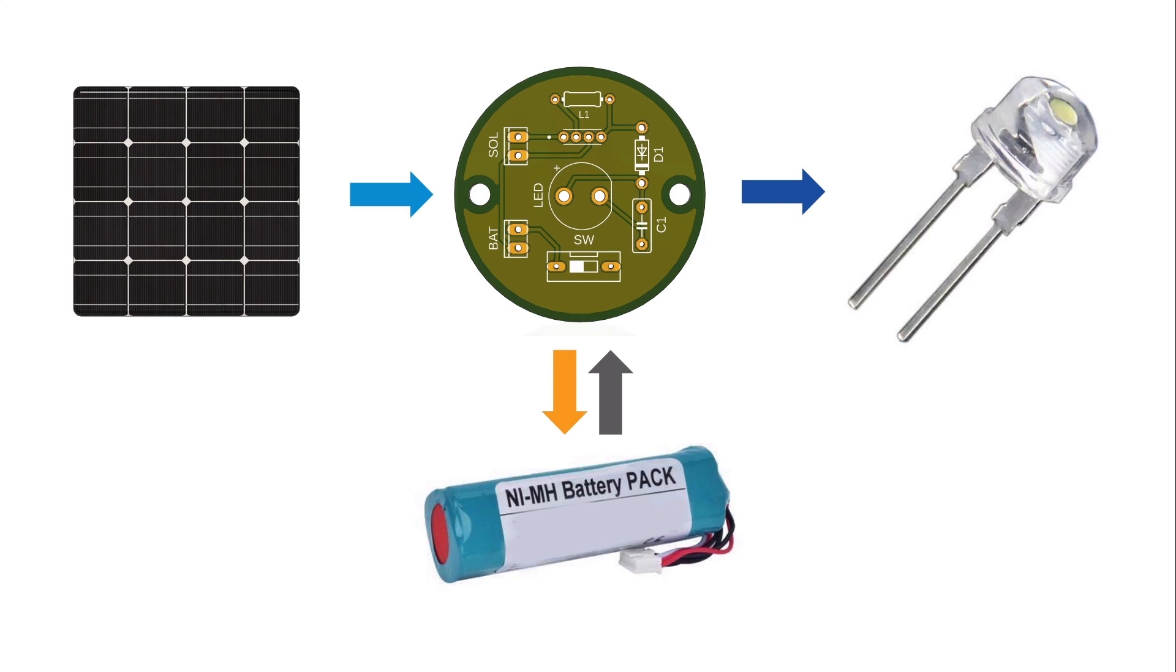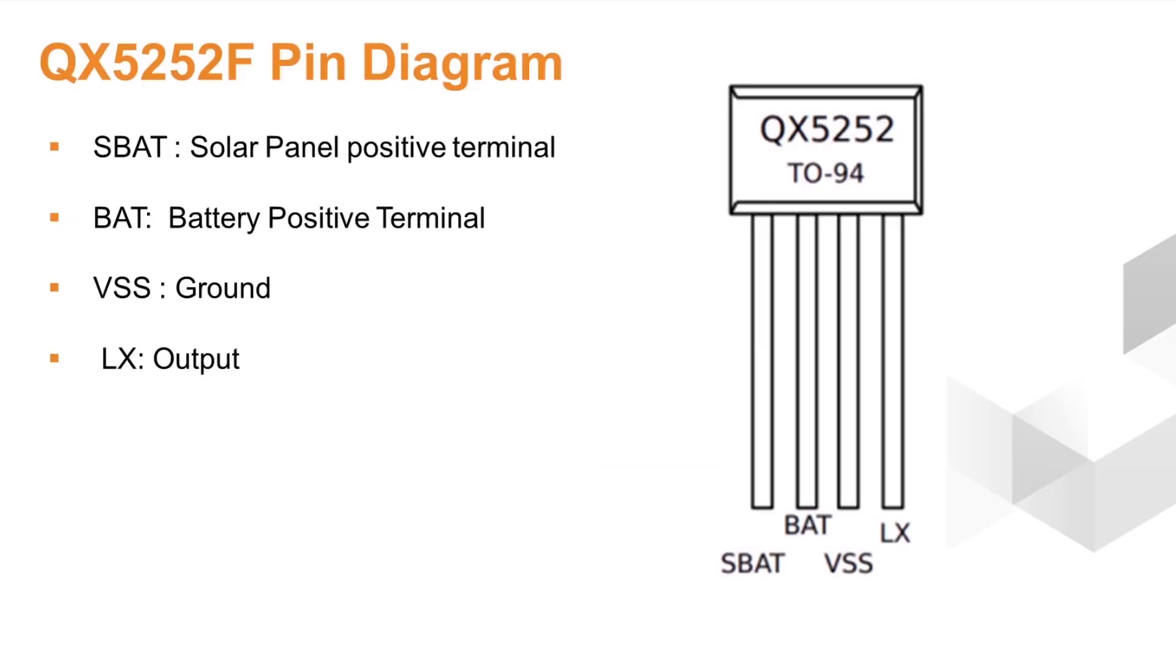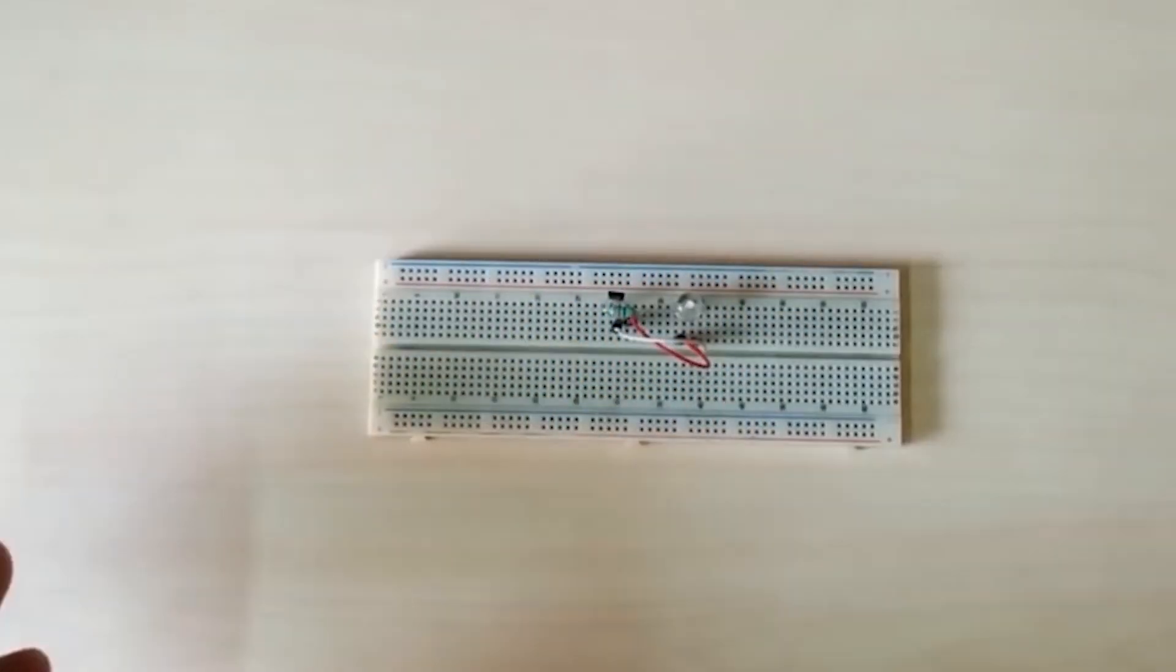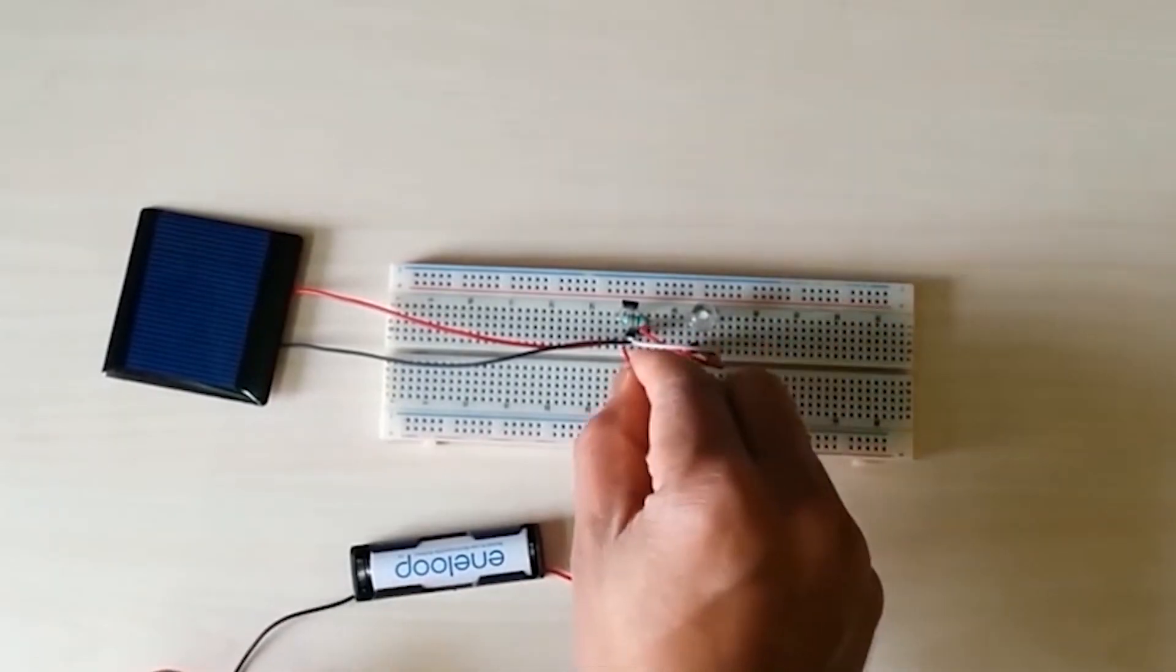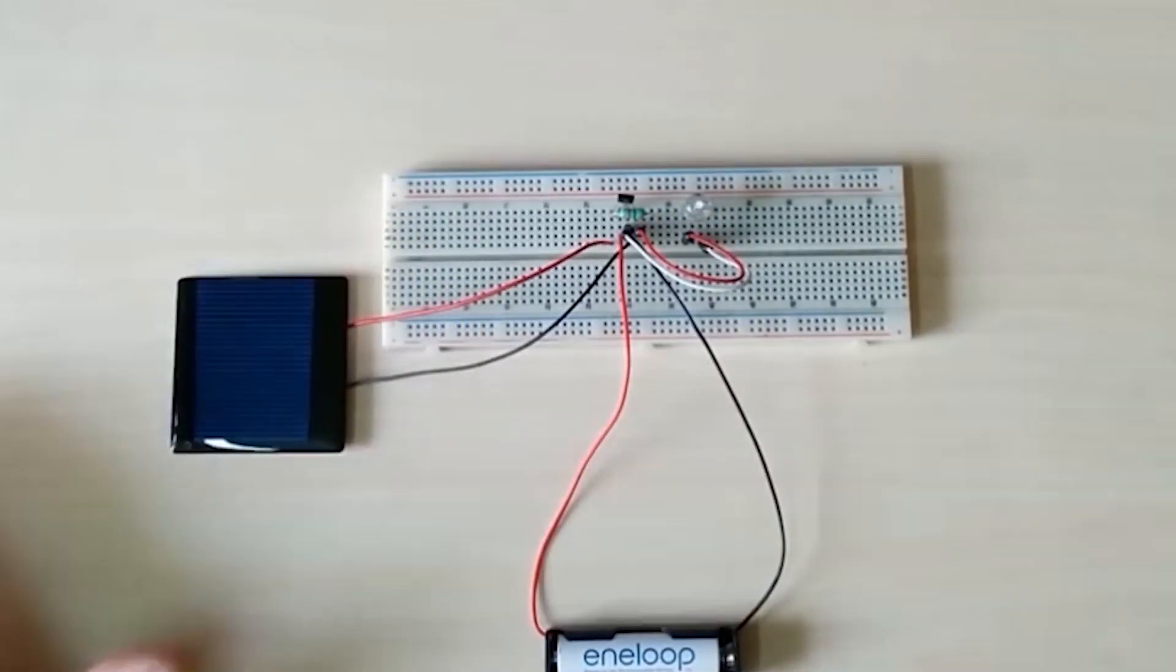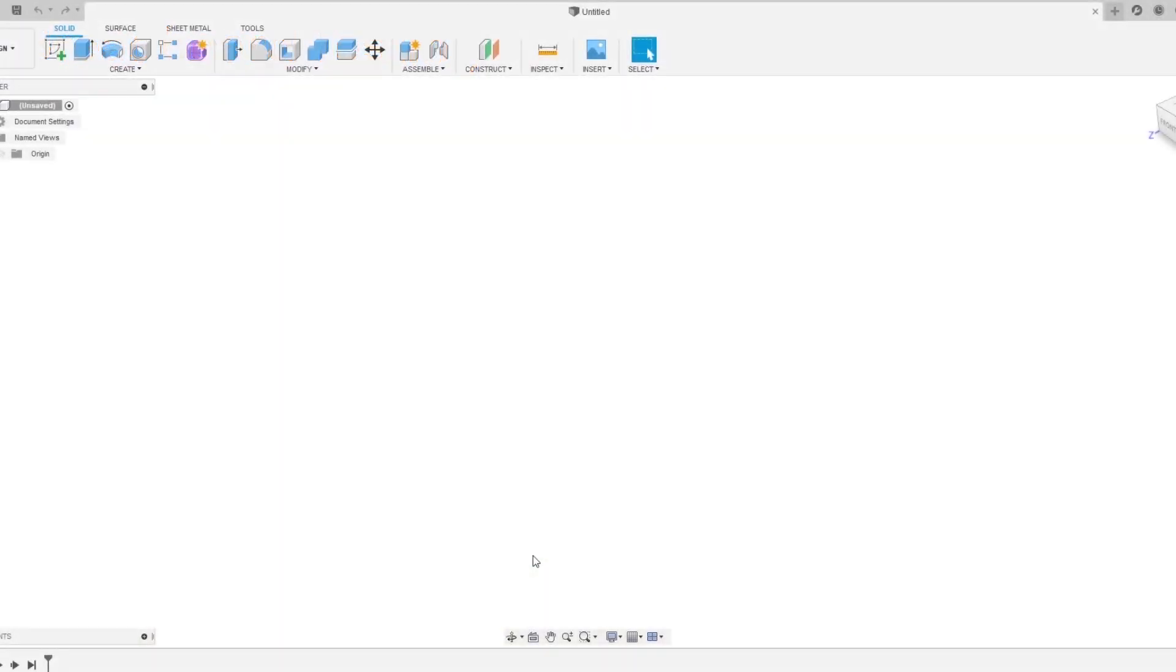The heart of the solar lamp is the controller. Here I am using QX5252F as the controller. First I made the circuit on a breadboard, then I checked the performance using my DSO. I have designed my final PCB on Autodesk Fusion 360.